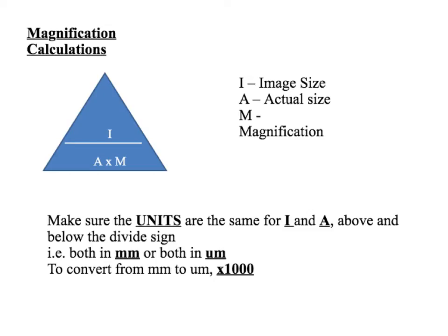A very common calculation is a magnification calculation. I like to use the triangle IAM — where I is the image size, A is the actual size, and M is the magnification. The image size is whatever you have on the screen, whether it be a picture or a photograph. A is the actual size of the cell, which is usually very, very small. M, the magnification, is how many times bigger the image is than the actual size.